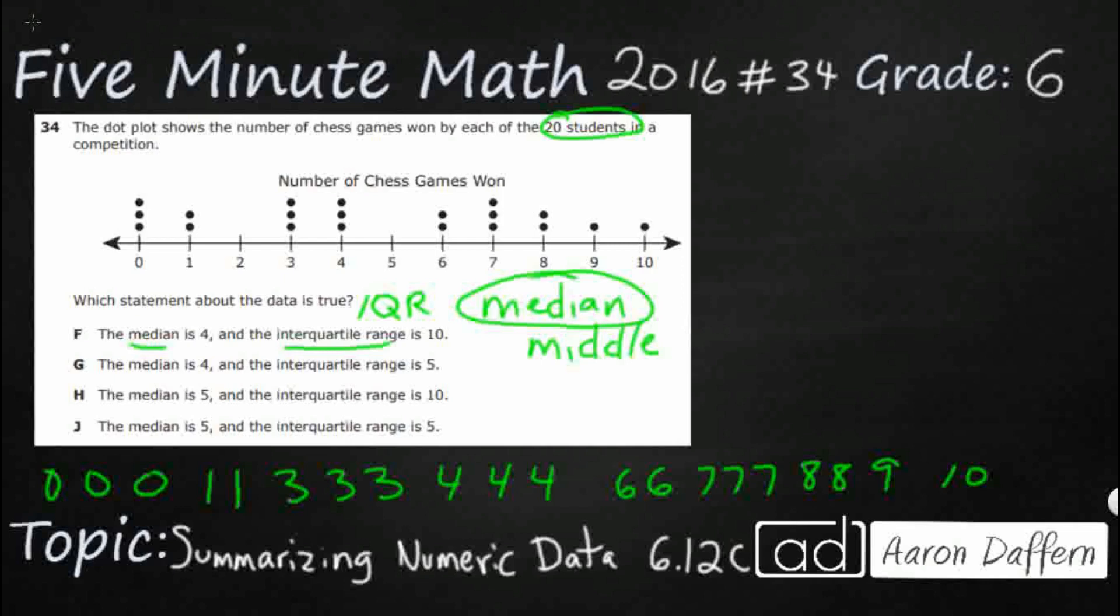If we count up 1, 2, 3, 4, 5, 6, 7, 8, 9, 10, right here is my median. The reason I know it's the median is because on the left side I've got 10 numbers, and on the right side 1, 2, 3, 4, 5, 6, 7, 8, 9, 10, I've also got 10 numbers. I'm literally just looking at the midpoint.